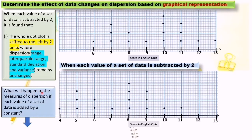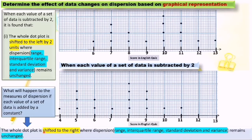What will happen to the measure of dispersion if each value of a set of data is added by a constant? The whole dot plot will shift to the right, where dispersion, range, interquartile range, standard deviation, and variance remain unchanged.